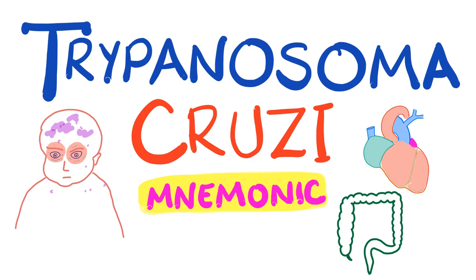Before we get started, look at this periorbital swelling — it's called the Romania sign. By the way, I made a mistake: it should be unilateral periorbital swelling, not bilateral.